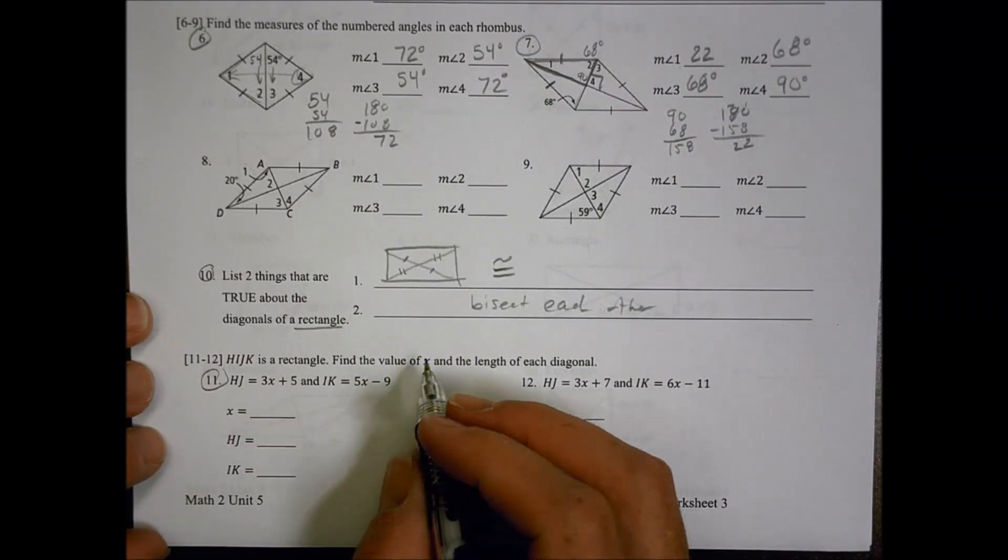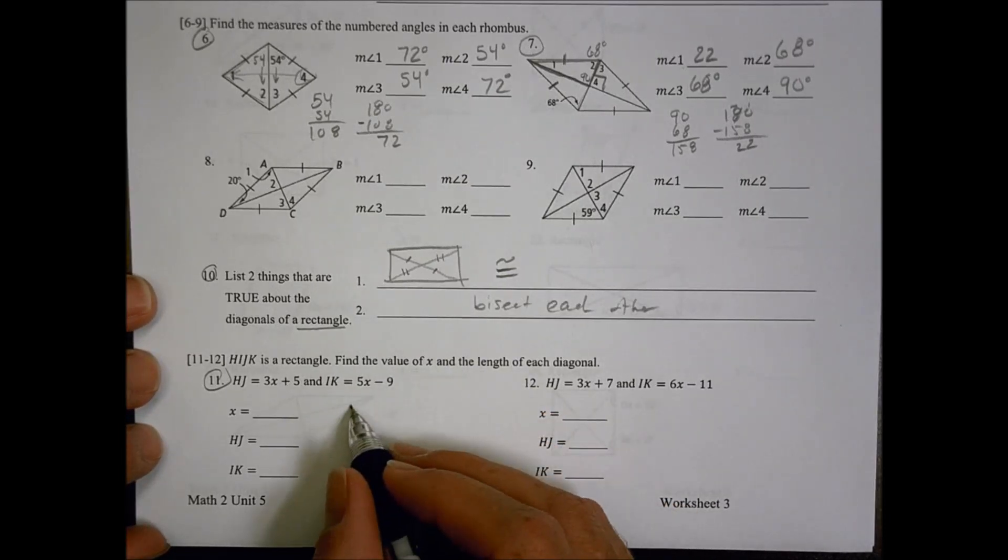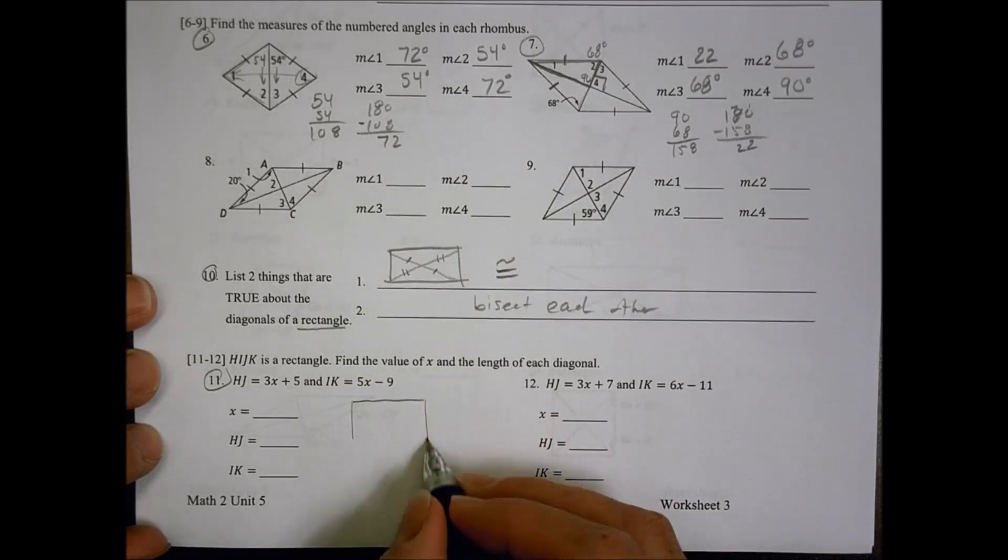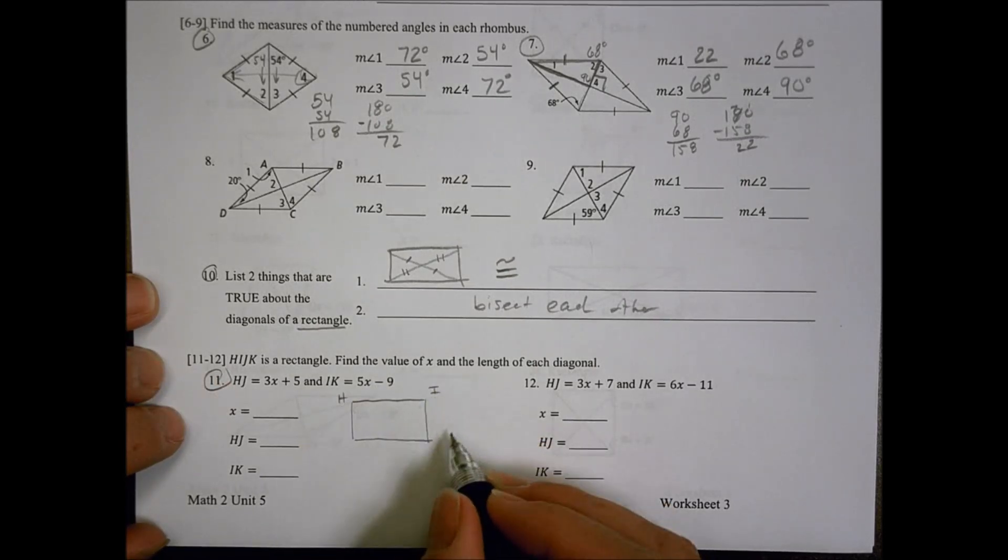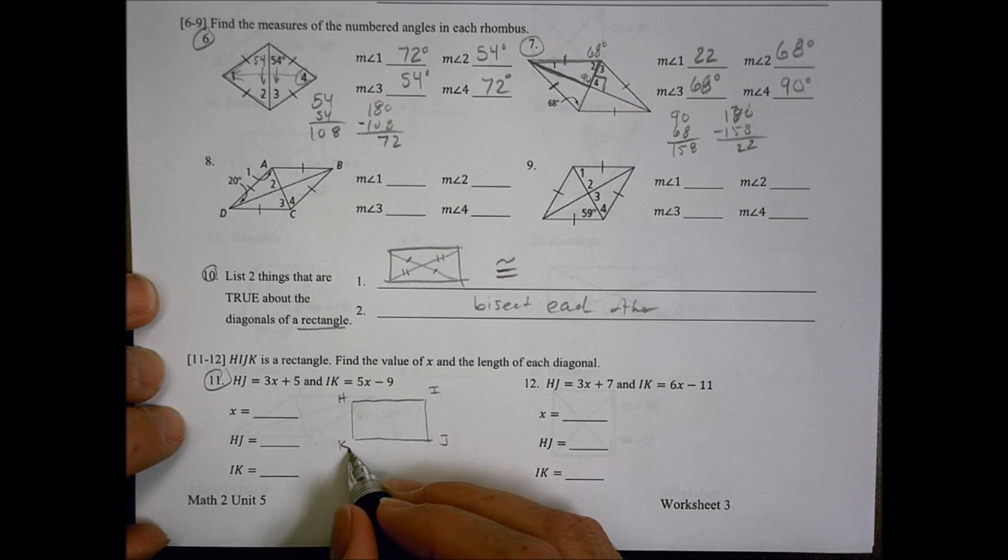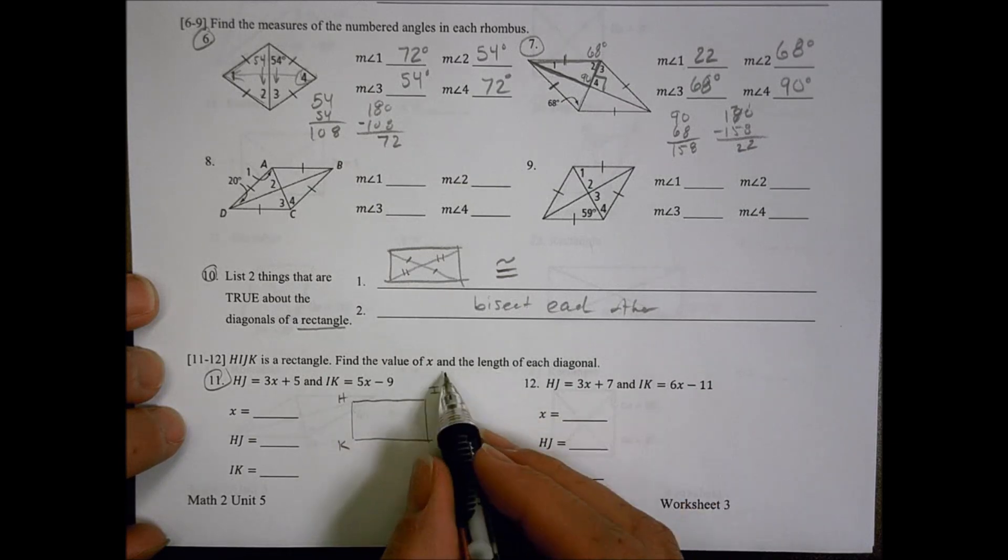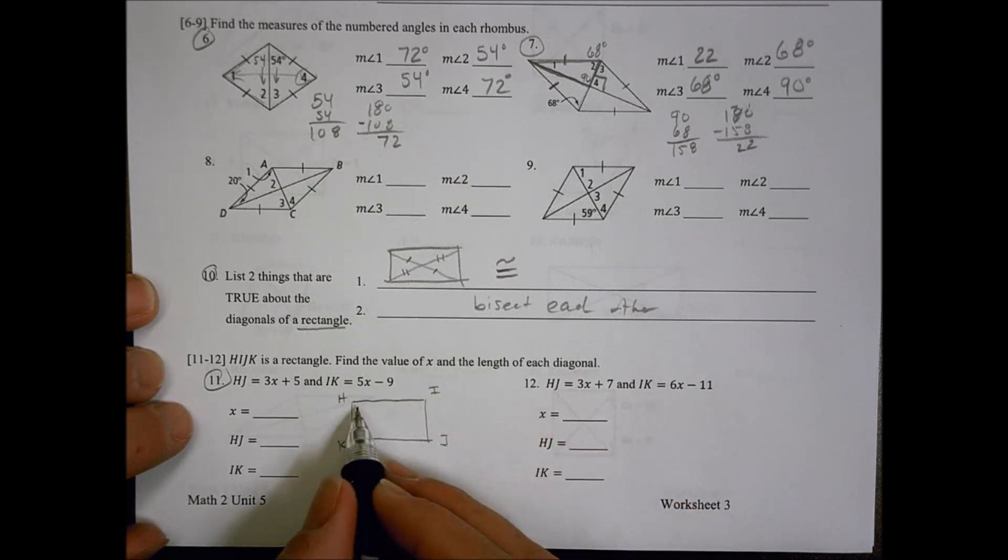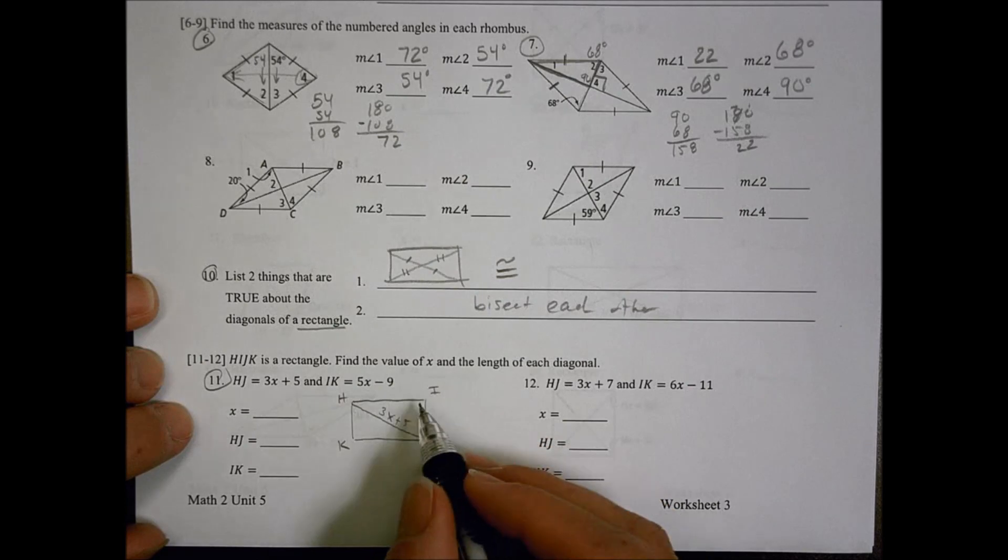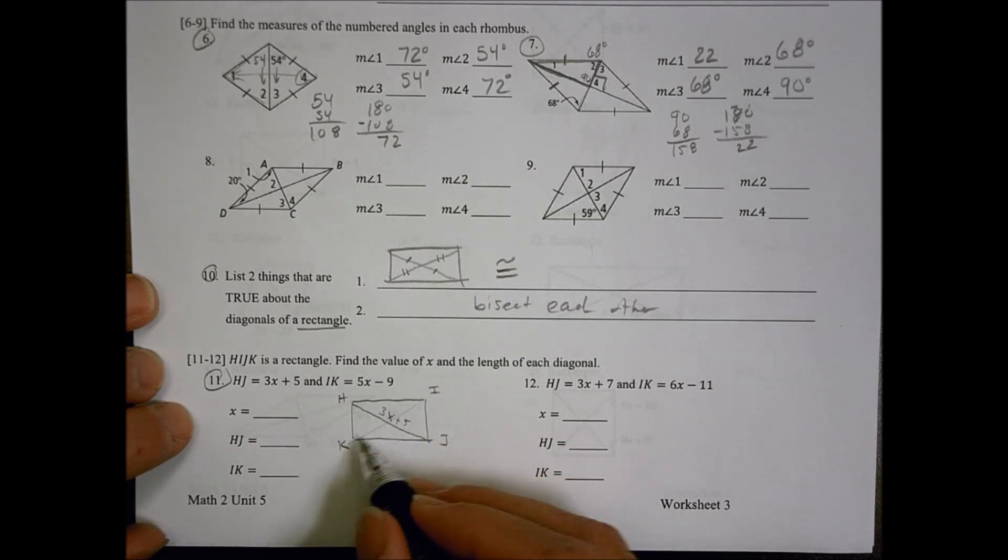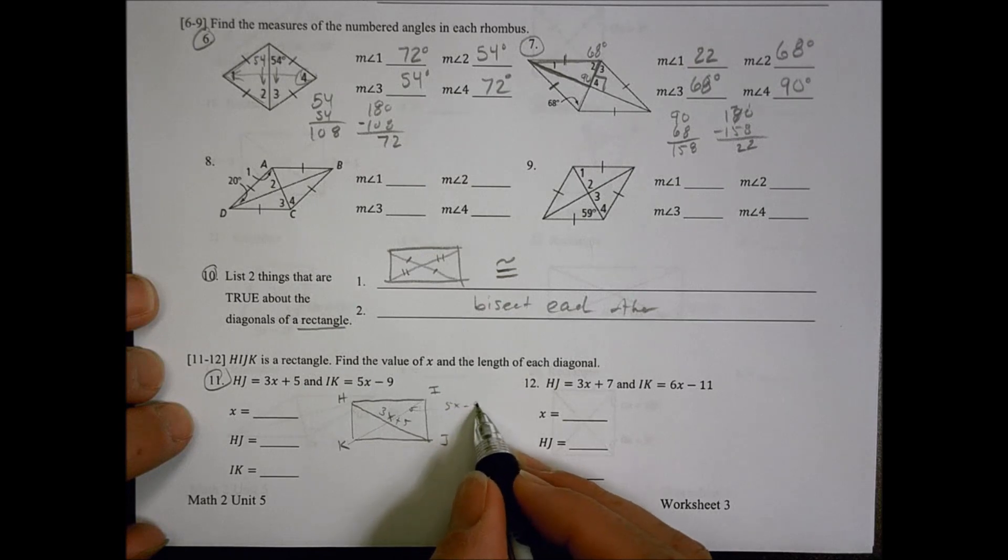We have a rectangle. Here it is. Here's our rectangle there. Just going to draw one out. We call it H, I, J, and K. It says to find the value of X and the length of each diagonal. It says that HJ, this length right here, is 3X plus 5. It says that IK, this length right there, that one there, is 5X minus 9.